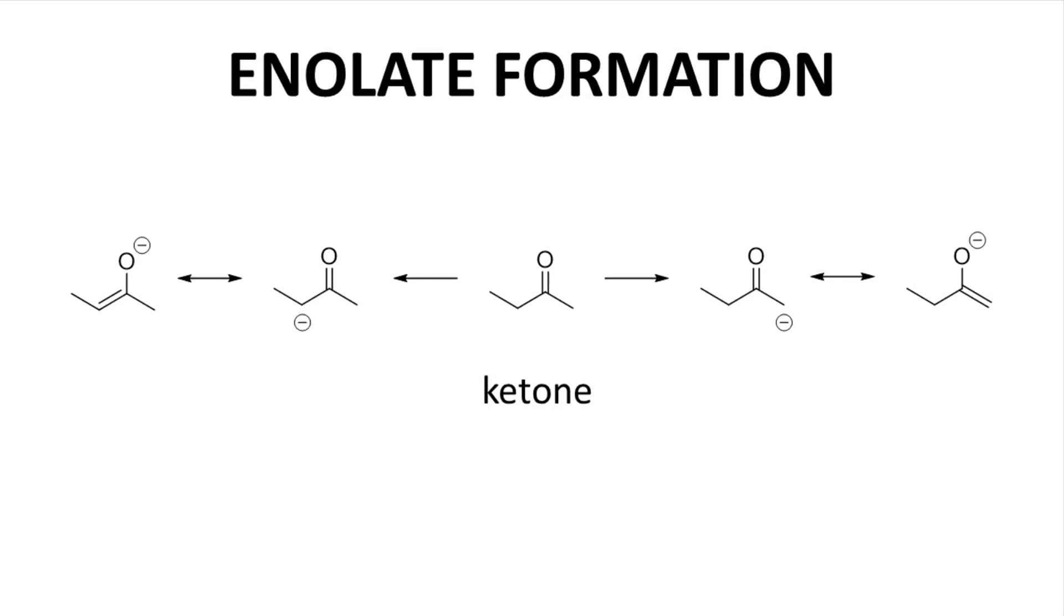Regioisomeric enolates are also possible. In the middle of the slide is a non-symmetrical ketone. When this ketone is treated with a base, there are two possible outcomes. The deprotonation can involve the alpha hydrogens on the left or the alpha hydrogens on the right to give two possible isomeric enolates. I tend to favor drawing enolates as carbanions, but these enolates are better understood by considering the oxyanion resonance forms. The left enolate is more stable because the alkene is more highly substituted.